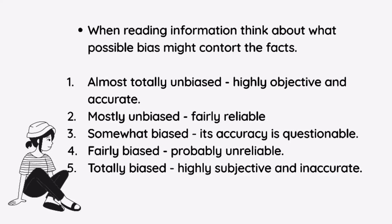When reading information, think about what possible bias might distort the facts. Information can be rated on a bias scale: almost totally unbiased — highly objective and accurate; mostly unbiased — fairly reliable; somewhat biased — accuracy is questionable; fairly biased — probably unreliable; totally biased — highly subjective and inaccurate.